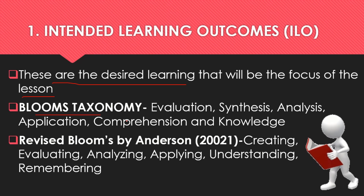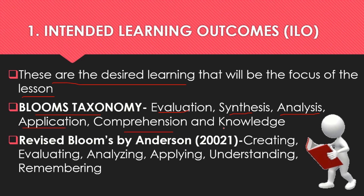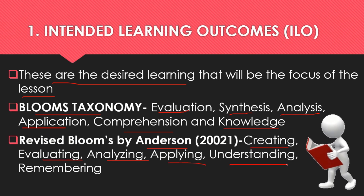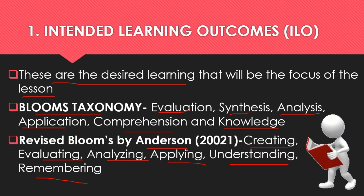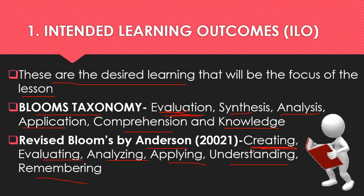We have here Bloom's Taxonomy. The old version comprises evaluation, synthesis, analysis, application, comprehension, and knowledge. It was revised by Anderson into a new version comprising creating, evaluating, analyzing, applying, understanding, and remembering. The highest level of cognition in the revised version is creating, while in the old version it is evaluation.